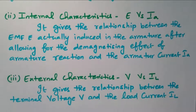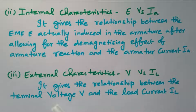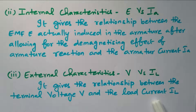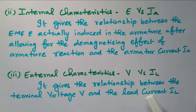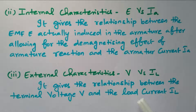The third one is the external characteristics. It gives the relation between the terminal voltage V and load current IL. So it will give the relation between V and IL. Initially we are giving the field current — the excitation — so that is called the magnetization curve. Thereafter EMF is induced inside the armature — that is the internal characteristics. After some drop and after the losses, the voltage available at the output side is called the external characteristics — terminal voltage and load current IL.